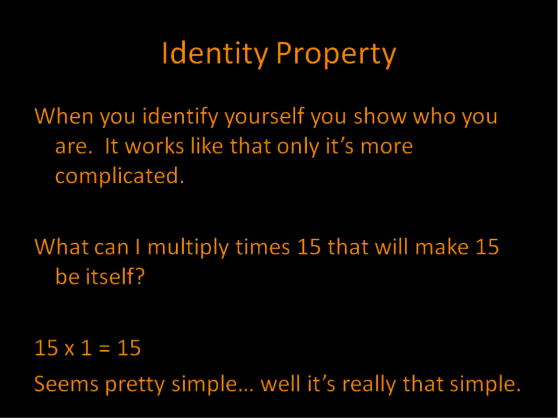Multiply a number times 1, you'll get that number. This is the identity property. You can do that with fractions and negatives and positives and decimals and anything you want. You multiply it times 1, you're going to get that number back again. Multiply a variable times 1, you get that variable by itself.